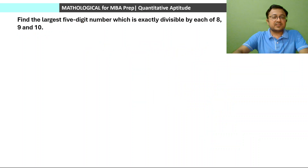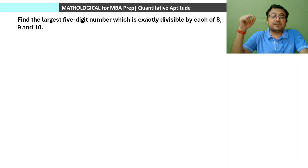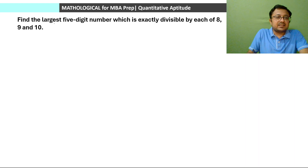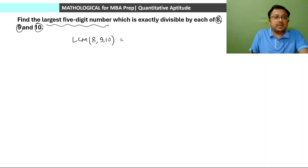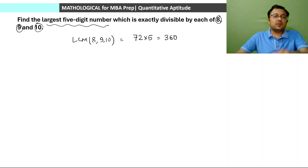Next question — the last of this type: find the largest 5-digit number which is exactly divisible by each of 8, 9 and 10. LCM of 8 and 9 is 72. Since 10 has a factor of 5 not in 72, multiply by 5: LCM = 72 × 5 = 360.